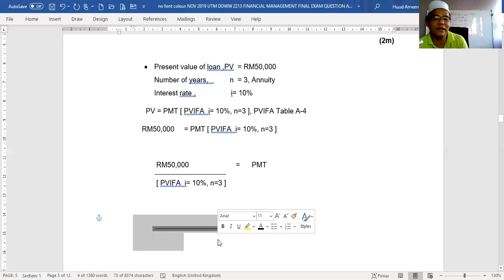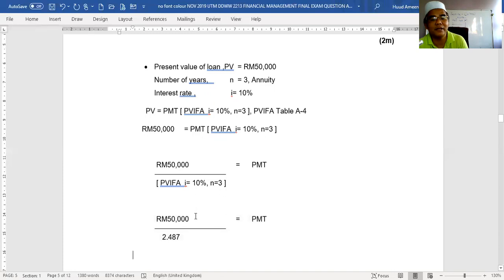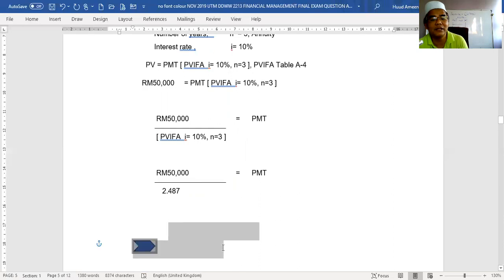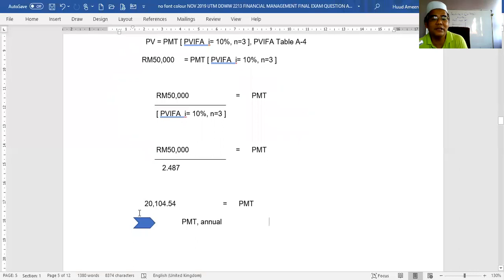Refer to your table A-4 with I equal to 10% and N equal to 3. So the answer: 50,000 divided by 2.487. This is very easy.